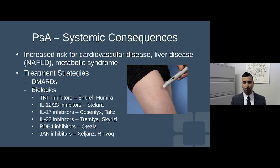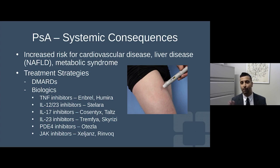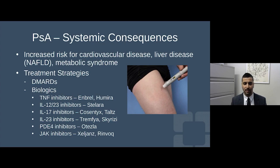Like rheumatoid arthritis, uncontrolled psoriatic arthritis has systemic consequences: increased risk for cardiovascular disease, non-alcoholic fatty liver disease leading to cirrhosis, and metabolic syndrome including insulin resistance, type 2 diabetes, and high cholesterol. For treatment, while some drugs are used in both RA and psoriatic arthritis, recent guidelines from the American College of Rheumatology and National Psoriasis Foundation recommend starting patients with moderate to severe psoriatic arthritis on a biologic like Humira or Enbrel right away — different from RA where the gold standard is still to start with methotrexate. Drugs used exclusively in psoriatic arthritis include Stelara, Cosentyx, Taltz, Tremfya, and most recently Skyrizi, which received FDA approval.